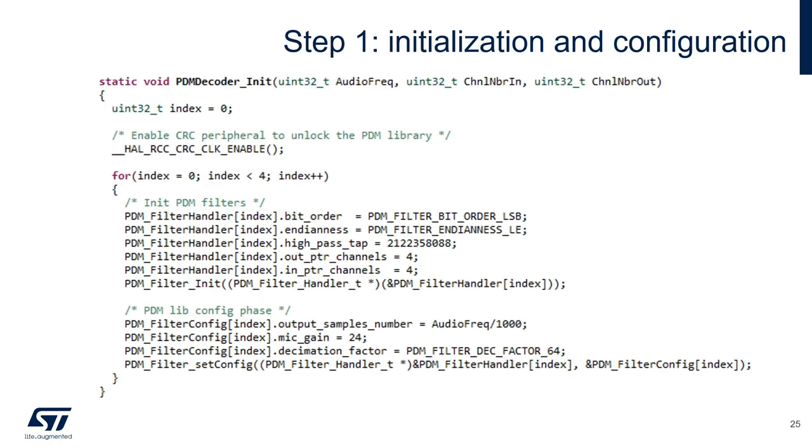So let's start from the initialization and configuration of the library. First of all, we have to activate the STM32 CRC peripheral to unlock the library, which can be run only on STM32. Then we will fill the initialization and configuration structure for each microphone. In our case, we will have four microphones, so we will fill all the information for the initialization. Please note that we assign four for both output and input channels, which is consistent with our buffer structure. And then we can call the initialization function.